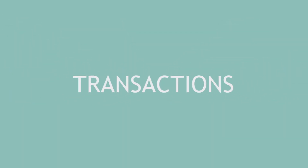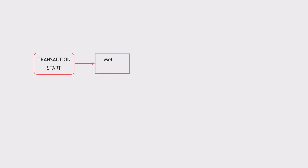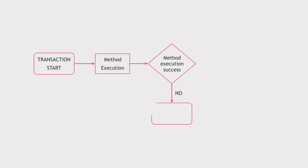Now let's talk about transactions. This is a huge topic and beyond the scope of this course, but let's look at the essentials. So what happens when a method is transactional? The method executes inside of a transaction. If anything goes wrong in the middle of the method execution, the transaction will be rolled back. Otherwise it will be committed.